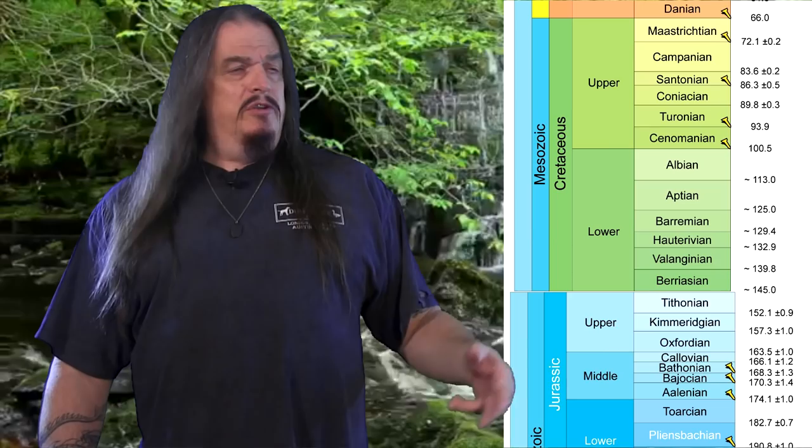This episode brings us toward the middle of the Cretaceous period, 120 to 100 million years ago, and there were a lot of birds already. A couple episodes ago, we looked at the origin of birds in the Jurassic, and now we'll look at how they've diversified since then.